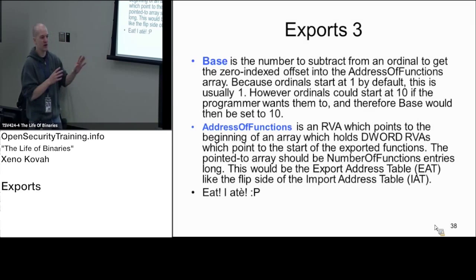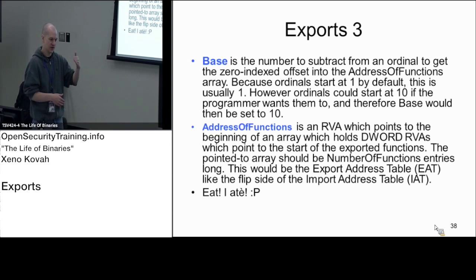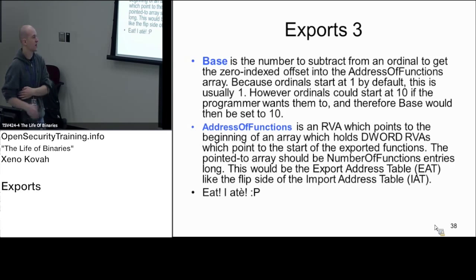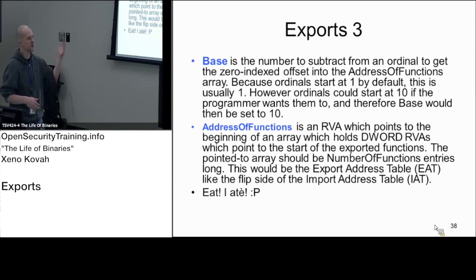To some degree, I think part of the point of this might be to break backwards compatibility. If people used to import function 1, 2, 3, and you set the base to 10, now they need to import function 10, 11, 12. This could be used to explicitly break backwards compatibility so callers need to update their code. But all you need to know for base is that it's the starting index used into the ordinal table.